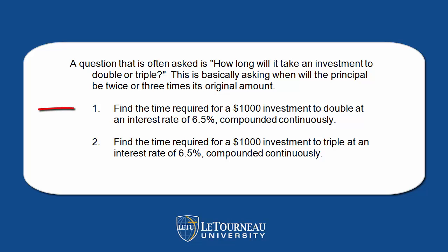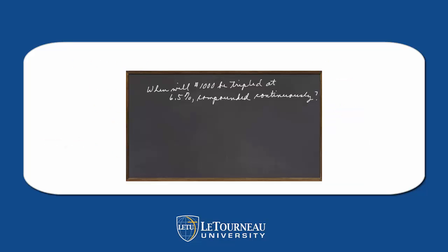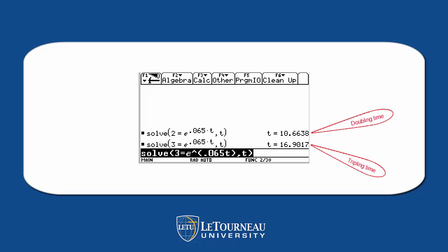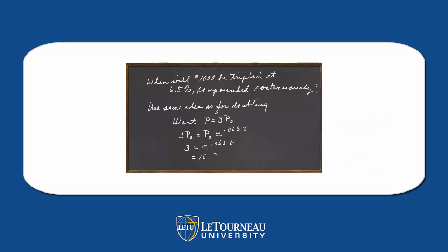Now we looked at doubling time. How about if we want to know how long it will take that same investment to triple? We're going to use the same idea. We want P to equal 3P₀, so 3P₀ equals P₀ times e to the 0.065t. Go to the calculator — be careful keying it in properly. Ask the calculator to solve for t. Notice it takes another about 6 years, a little better than 6 years, for our money to triple.